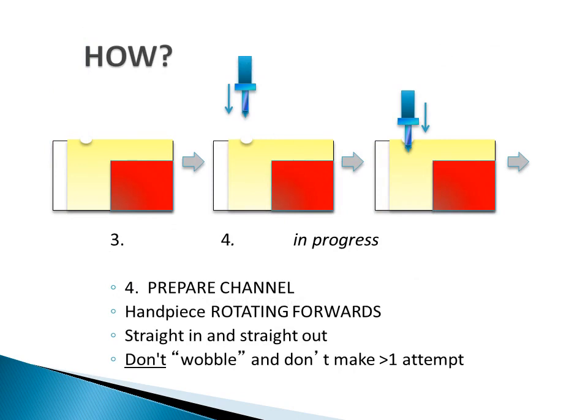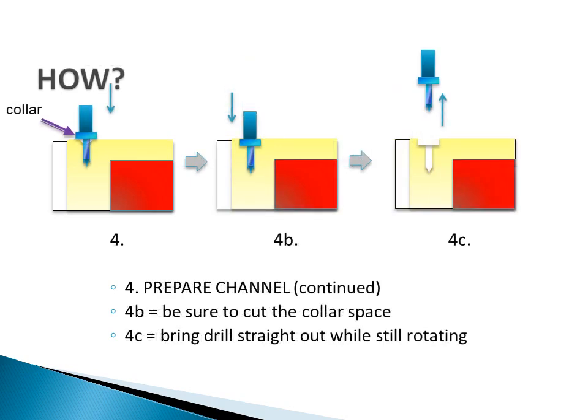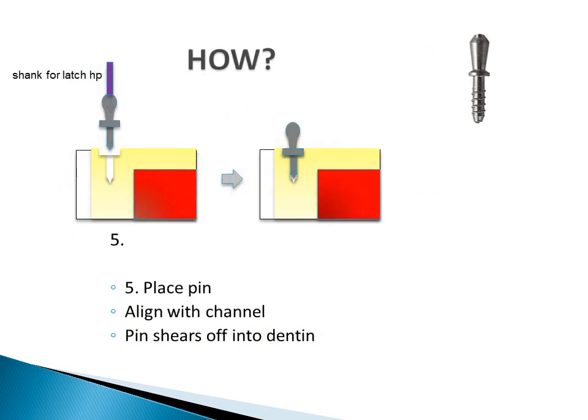Step 4 — Prepare the channel. Step 5 — Use the slow speed latch handpiece, making sure the handpiece is rotating in a forward direction. Move straight in and straight out of the dentin. Other motions and/or additional attempts lead to a pin channel with a large diameter, and the pin will not be retained as intended. In preparing the Max pin channel, be sure to prepare the collar space. When the channel former collar reaches the dentin, you will feel more resistance. Continue with a little pressure until the collar area is prepared in the dentin surface. The last step is to place the pin in the channel. The Max pin is on a plastic shank, which should shear as soon as the pin is stable in the dentin. Align the pin with the channel and the pin is quickly placed.